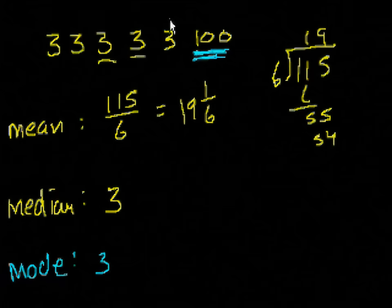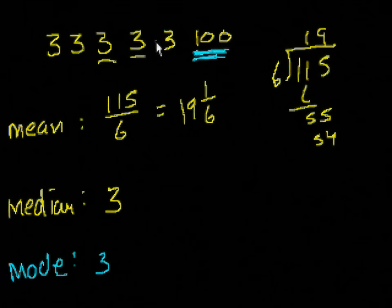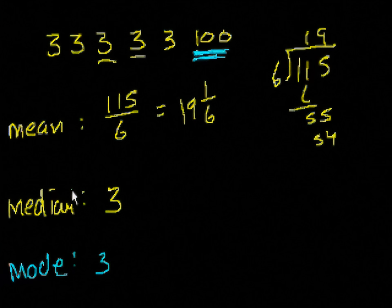So in this case, when you had this outlier, the median and the mode tend to be, maybe they're a little bit better about giving you an indication of what these numbers represent. Maybe this was just a measurement error. But I don't know. We don't actually know what these represent. If these are house prices, then I would argue that these are probably more indicative measures of what the houses in an area cost.